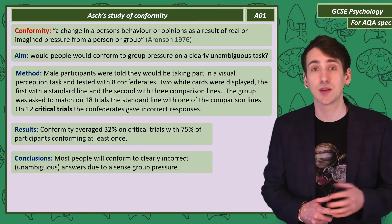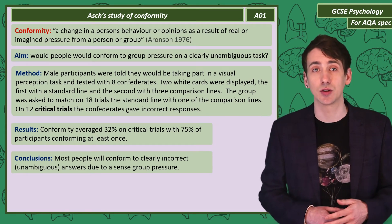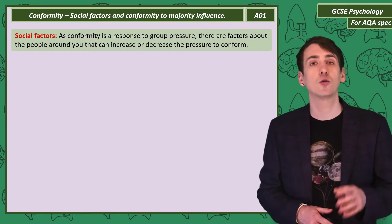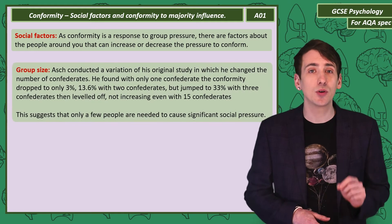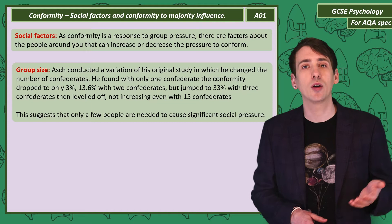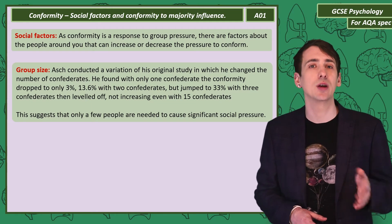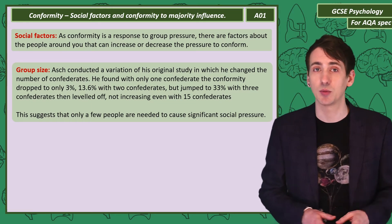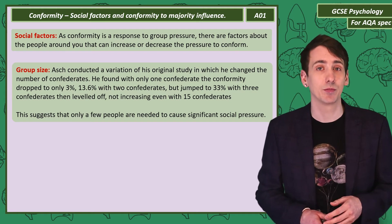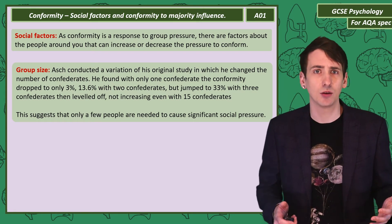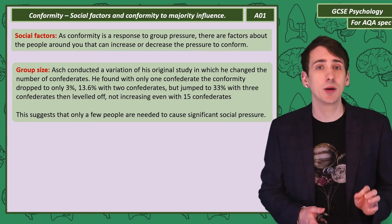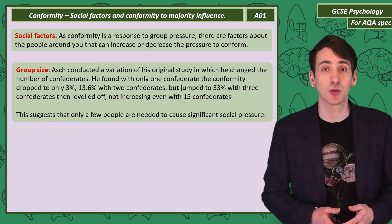Asch conducted a series of variations of his original study to see what social factors influenced conformity levels. For group size: when the number of confederates was decreased, conformity dropped. With just one confederate, conformity was only 3%; with two, 13.6%; and with three, back up to 33%. But then conformity levelled off, not increasing even with 15 confederates. This suggests that only a few people are needed to cause significant social pressure.